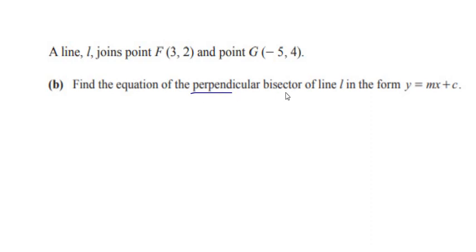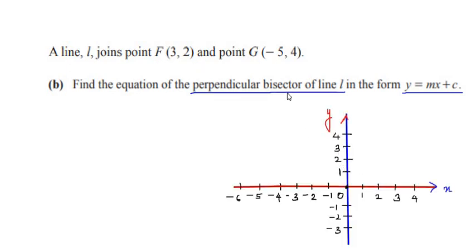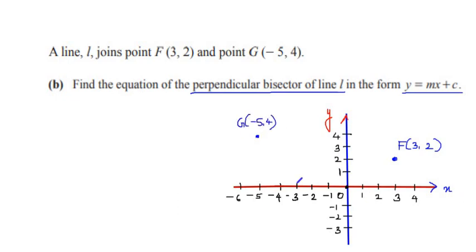Now let us look at the next part: find the equation of the perpendicular bisector of line L in the form y = mx + c. Here is a rough graph to help understand. Point F is at x = 3, y = 2, and point G is at x = -5, y = 4. Joining the two points gives us line L.